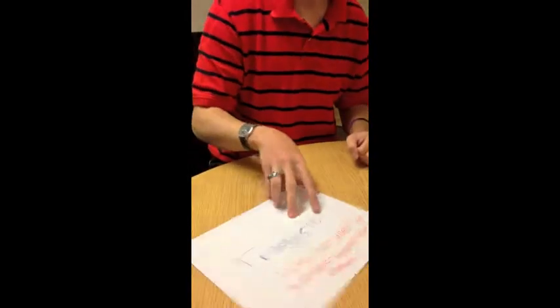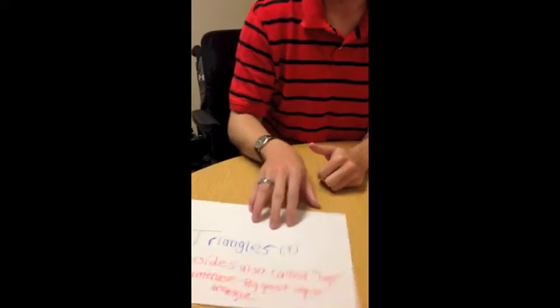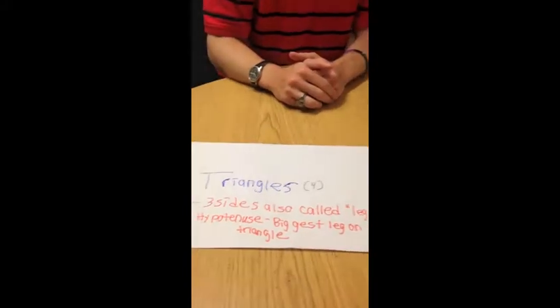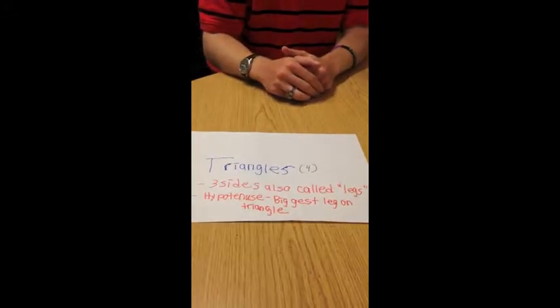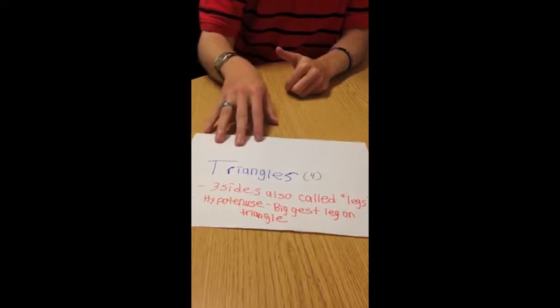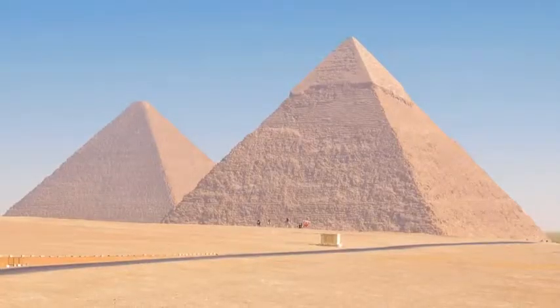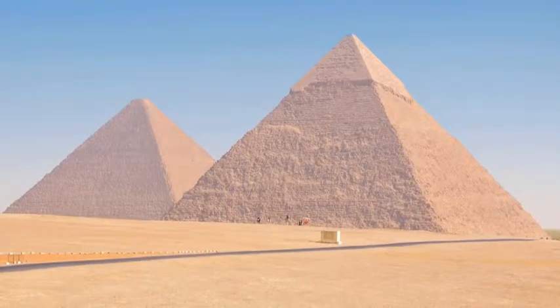The first type of polygons that we are going to work with in this video are triangles. There's four classifications of triangles, of which I'm going to show you today. The Great Pyramids have triangular sides.